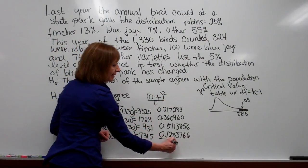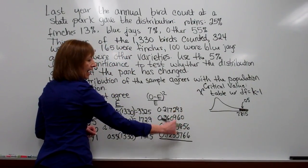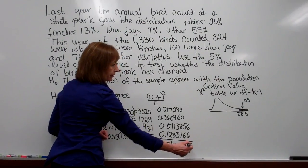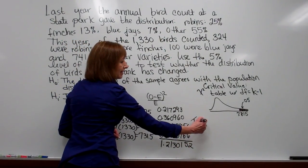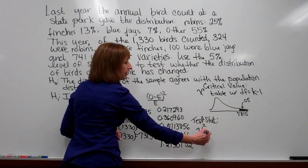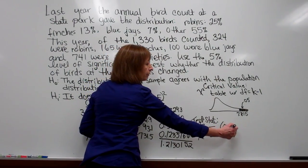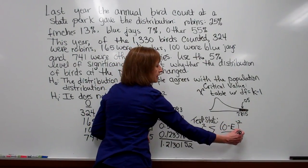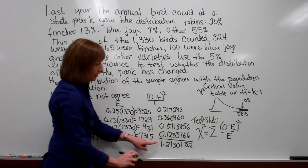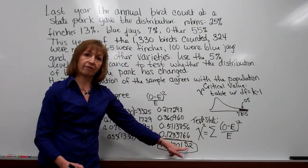So those are our values for observed minus expected quantity squared divided by expected. To get our test statistic, what we do is we just add that column up, and when we add all these numbers together we get 1.2130152. So our test statistic, chi squared, equals the sum of all of those values of the observed minus expected quantity squared divided by expected.